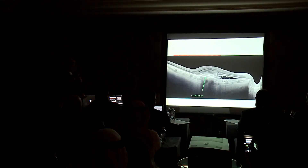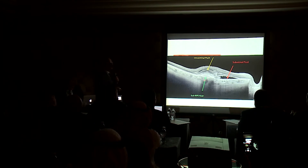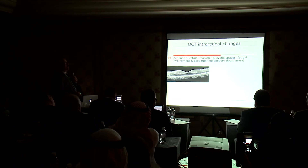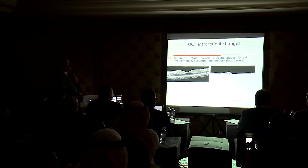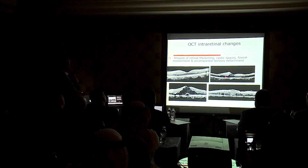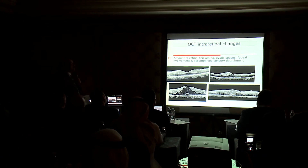When looking at a choroidal neovascular membrane, we must look at the subretinal fluid, sub-RPE fluid, and intraretinal edema. These are the parameters we follow up to know if the patient is responding to injection or not. Moving to intraretinal changes: the amount of retinal edema and thickening — the most common example is diabetic retinopathy. We can now classify diabetic patients according to foveal involvement, whether there is sensory detachment, and whether there is a cyst in the fovea. We can get a lot of data from these line scans.